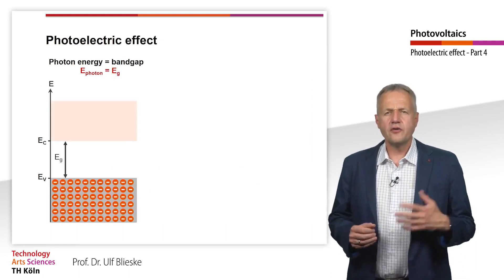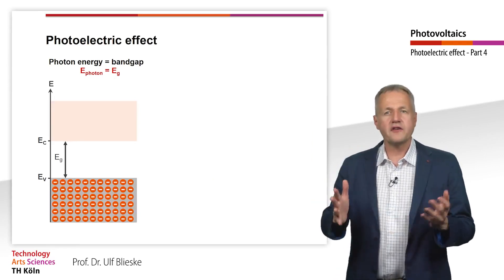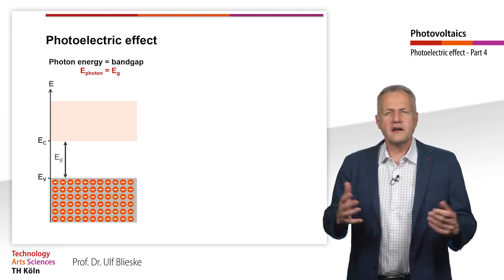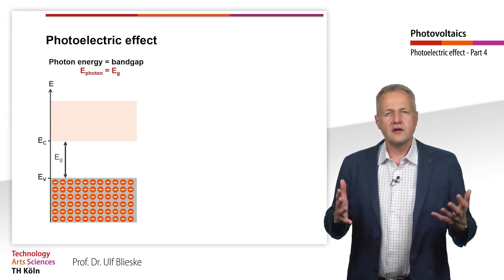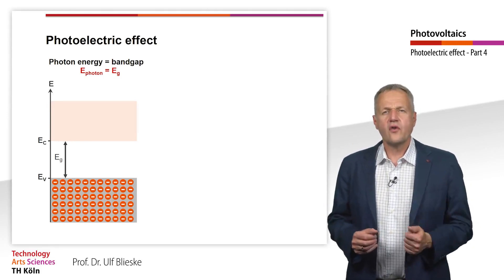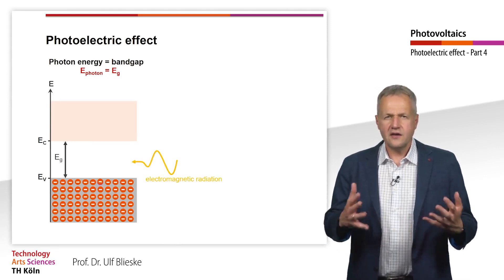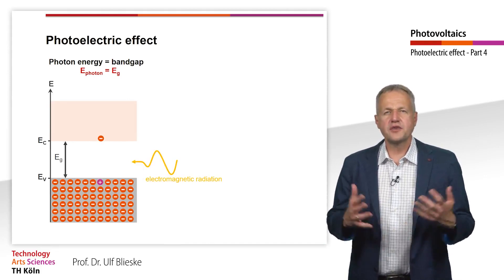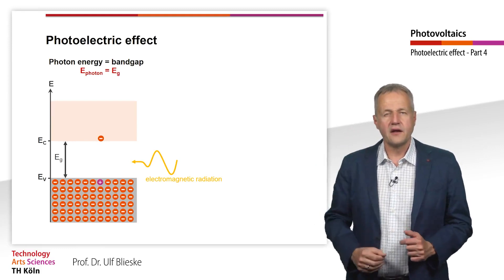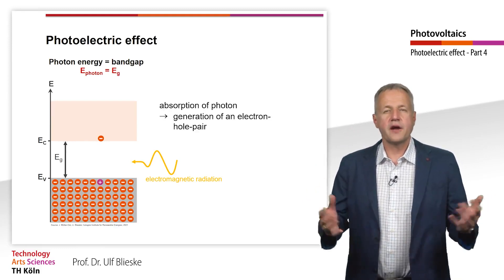We consider a photon which has exactly the energy corresponding to the band gap of a semiconductor. This photon can also be understood as a wave, for example as electromagnetic radiation. This wave now hits the semiconductor shown, where the radiation is absorbed. As a result, an electron is lifted from the valence into the conduction band. A hole remains, and an electron-hole pair is formed.